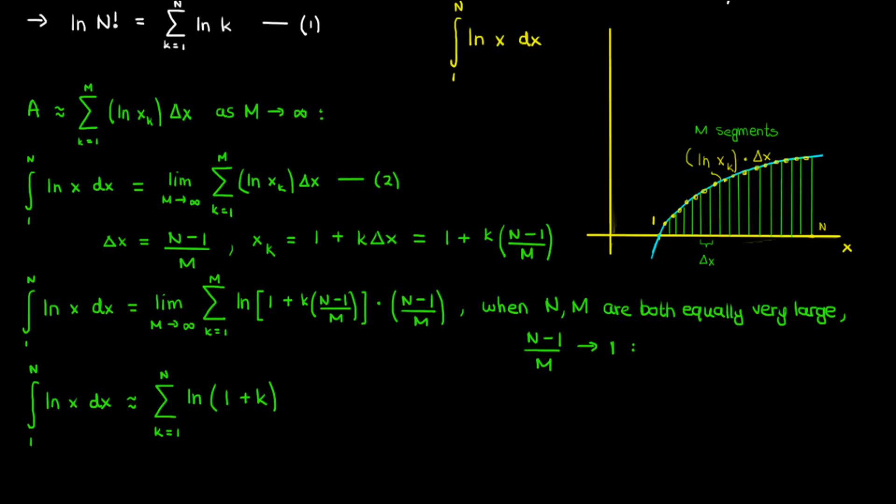Now when k starts at 1, the sum of the natural log of 1 plus k equals the sum of the natural log of k, because the natural log of 1 is just 0 anyway.